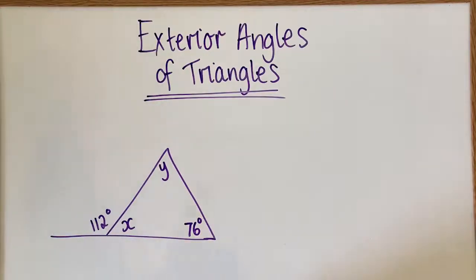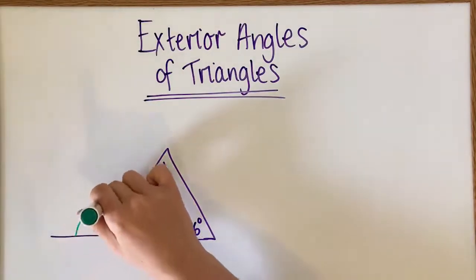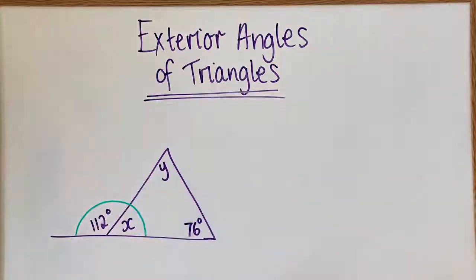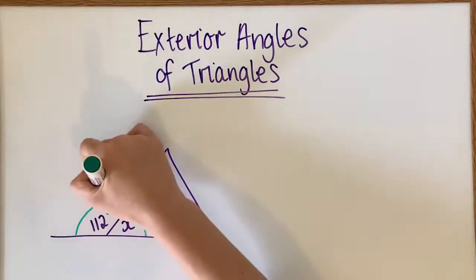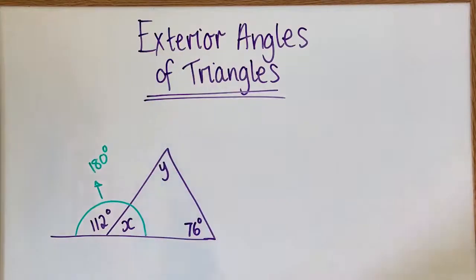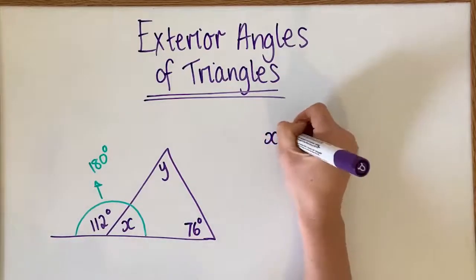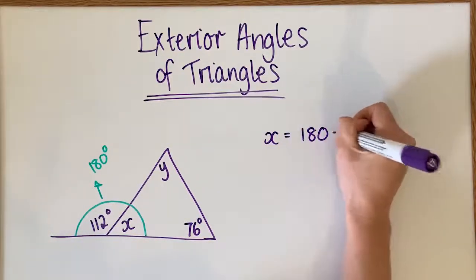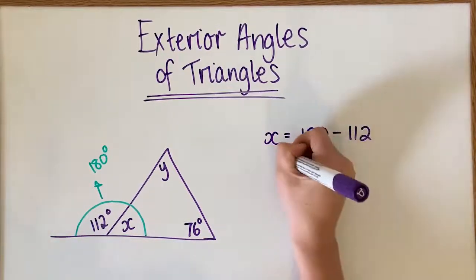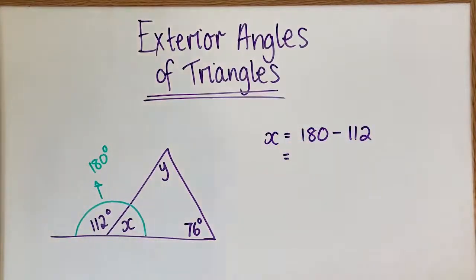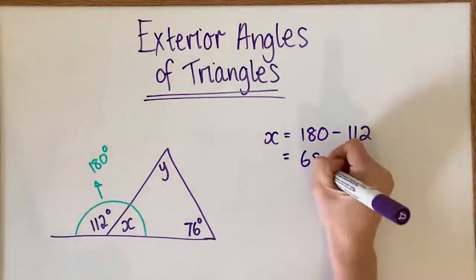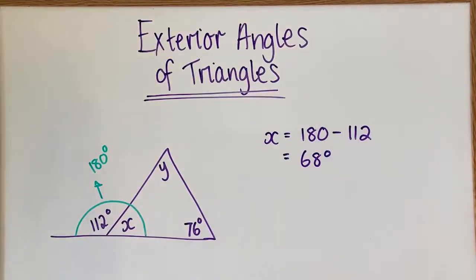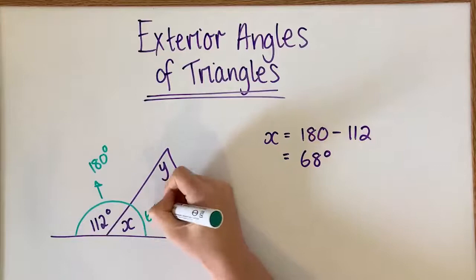However, the first thing I want to point out is that this is a straight angle, and a straight angle adds up to 180 degrees. If you want to know more about angles, we've got another video about that. To get X, I'm going to go 180 minus 112, because X plus 112 will give me 180. I can do that on my calculator, and that's going to be 68 degrees. I'm going to lightly write that in here in green.